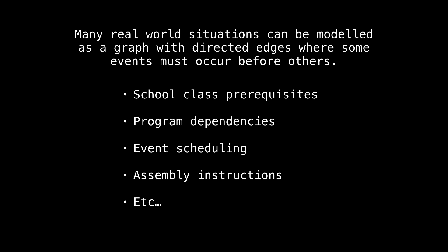The motivation for top sort is that many real world situations can be modeled as a graph of nodes and directed edges where some events have to occur before others. Some simple examples include school class prerequisites, program dependencies, event scheduling, assembly instruction ordering, and much much more.